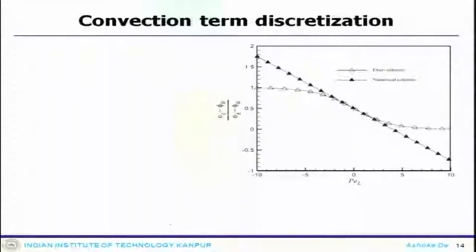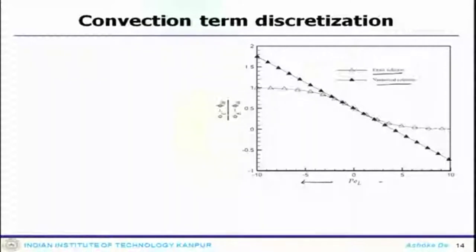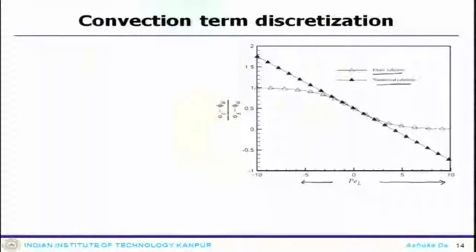One can plot them for varying Peclet number and see how the solution actually varies. This plot is where you compare your exact solution with your numerical solution. The numerical solution is obtained based on the CD scheme, and the Peclet number is varying between minus 10 to plus 10. What you can immediately see is the pattern of the exact solution versus the numerical solution, which shows a more linear profile.